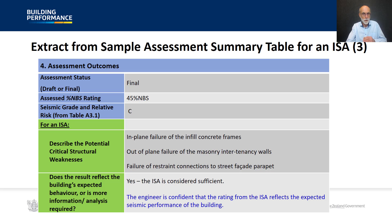In the final element of the assessment summary table, there is an important part linking back to the previous module: where an engineer is confident that the ISA they are submitting provides all the relevant information to the TA, they need to make the statement in accordance with section 2.5(iv) of the EPB methodology that they are confident the rating from the ISA reflects the expected performance of the building. This example illustrates how that statement can be brought through.